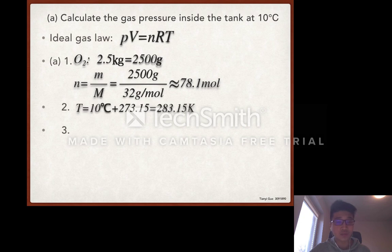Step 2 is we need to know the temperature in Kelvin. 10 degrees Celsius plus 273.15 is 283.15 Kelvin.